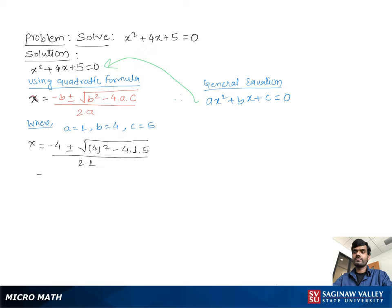Then we can write negative 4 plus minus square root of 4 squared, which is 16, minus 4 times 1 times 5, which is 20, over 2. Then we have negative 4 plus minus square root of negative 4 over 2.